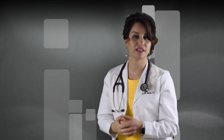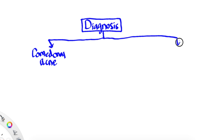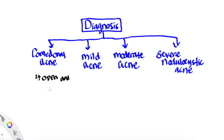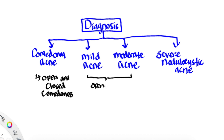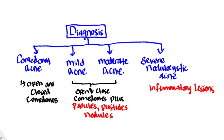Acne is a clinical diagnosis. It can range from just comedonal acne all the way to severe nodulocystic acne. Comedonal acne consists of just open and closed comedones. Mild and moderate acne consists of both comedones and papules and pustules. Nodulocystic acne includes nodules greater than five millimeters and there is scarring involved.